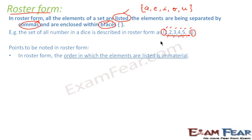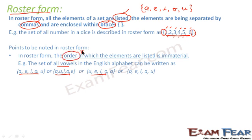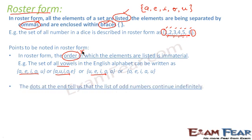Now there are some important points to note in roster form. First, the order of the elements is immaterial. For example, for the set of all vowels, whether we write {a, e, i, o, u} or {u, e, i, o, a} or any other order, all are the same — as long as the elements present are a, e, i, o, u. The order doesn't matter in roster form.